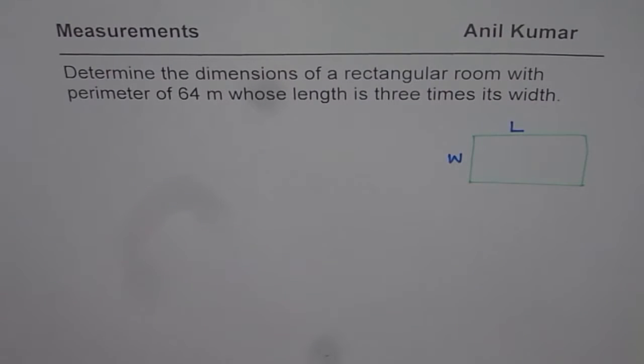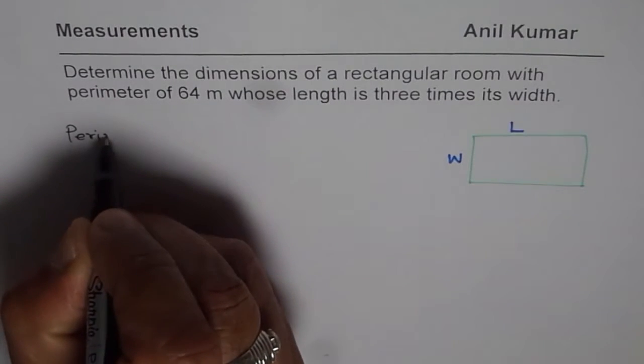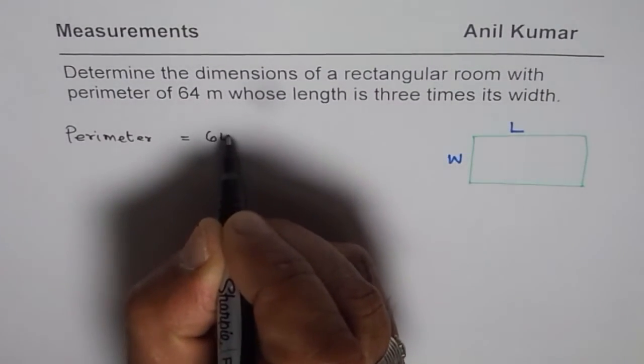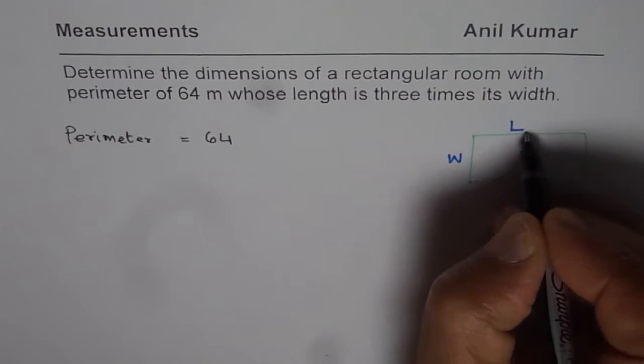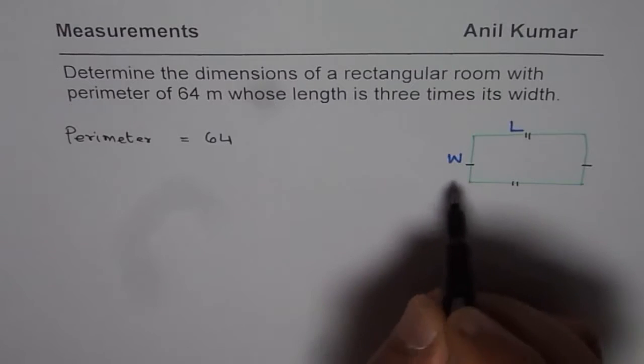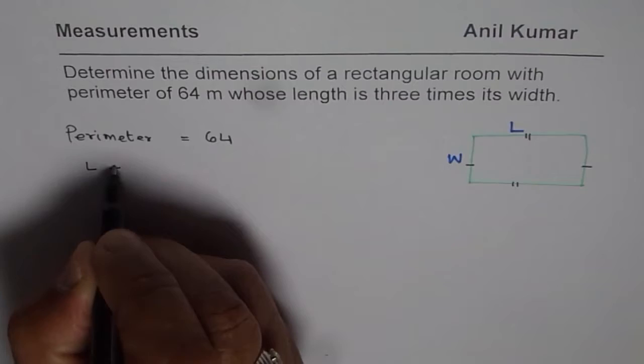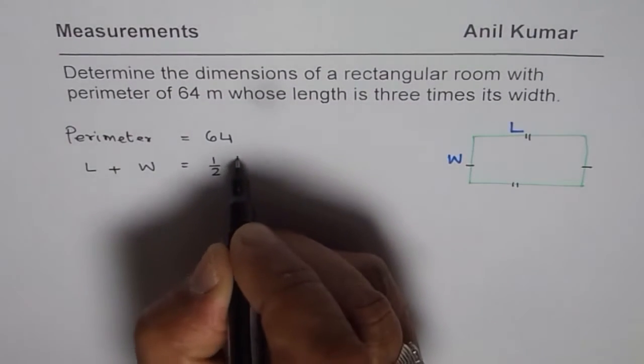What are we given? We are given that the perimeter is 64. As you know perimeter is sum of all the sides. In the rectangular room the opposite sides are same, so therefore sum of length and width is half of perimeter. We can say length plus width is half of perimeter.